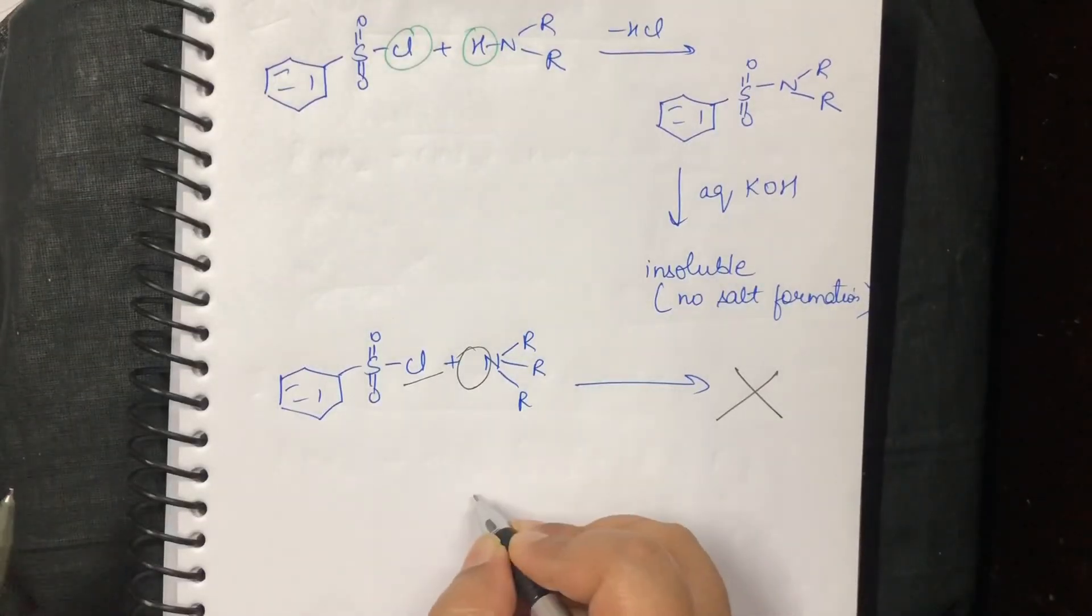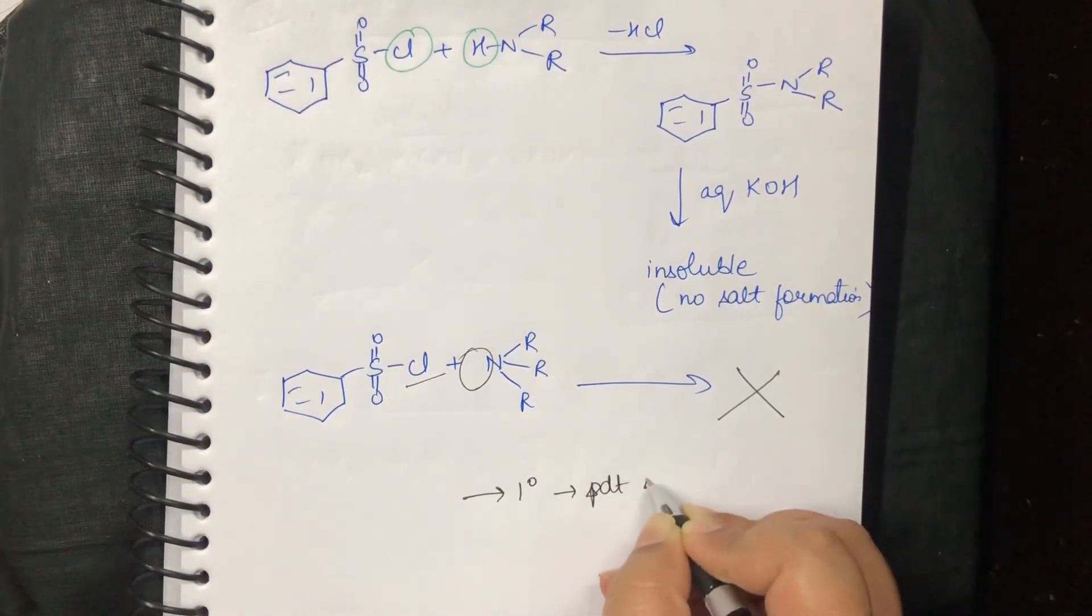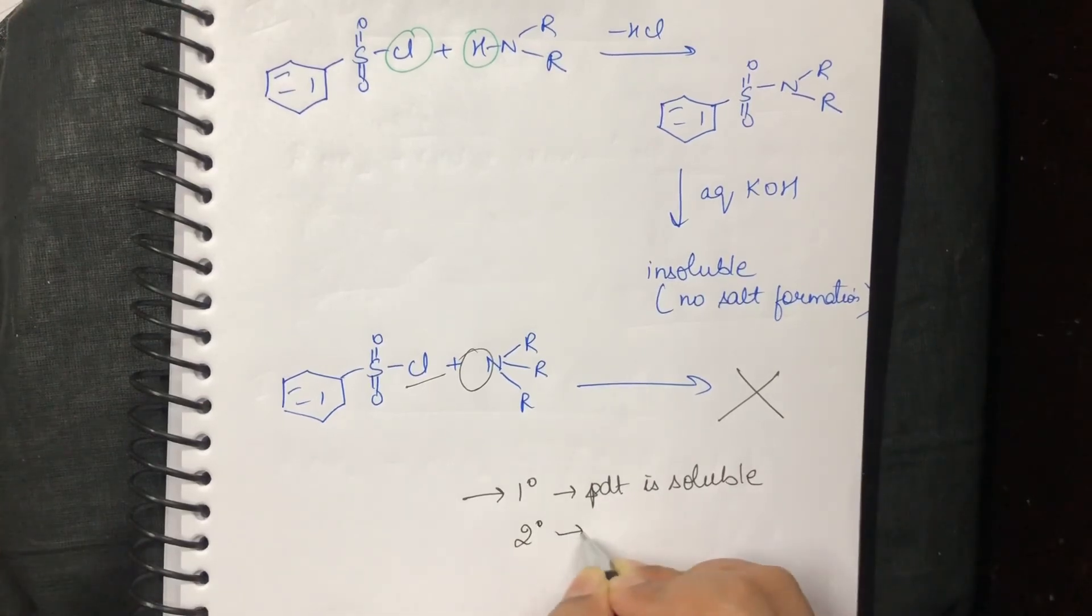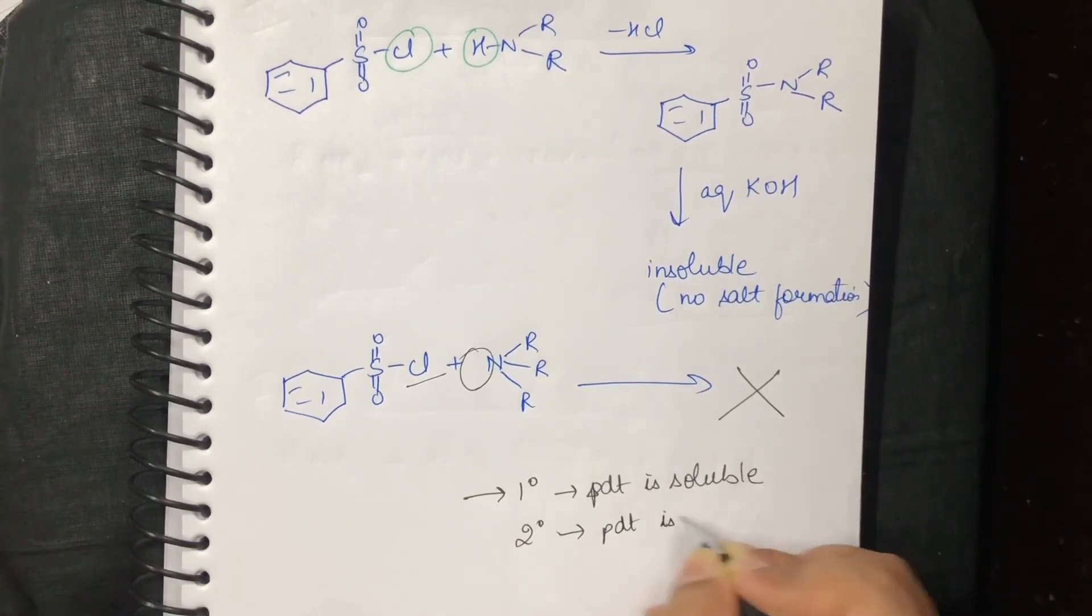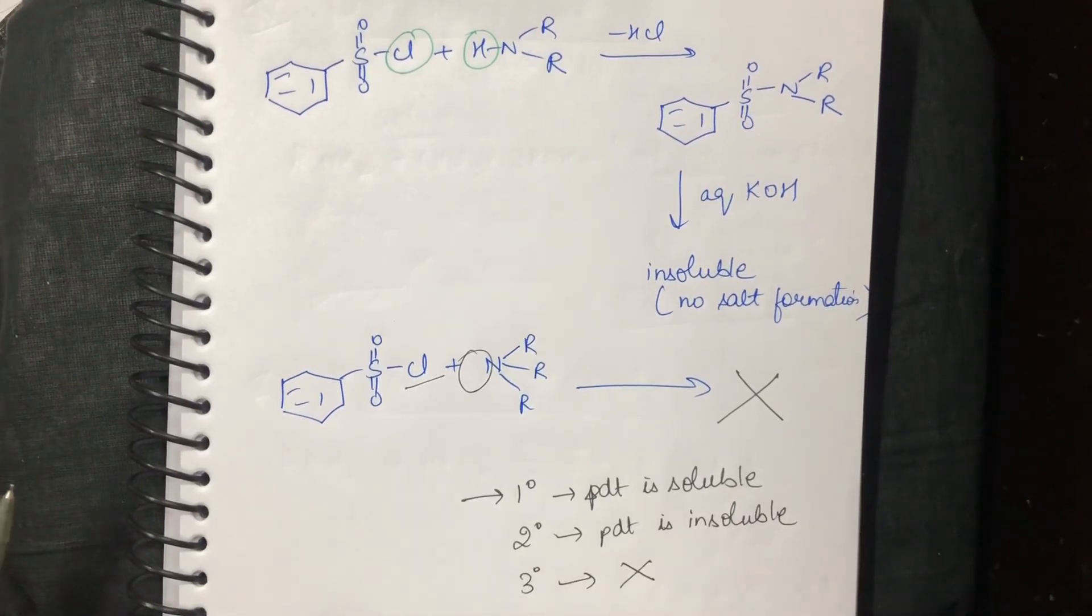So, Hinsberg test: you have primary, the product is soluble; secondary, the product is insoluble; and for tertiary, there is no reaction.